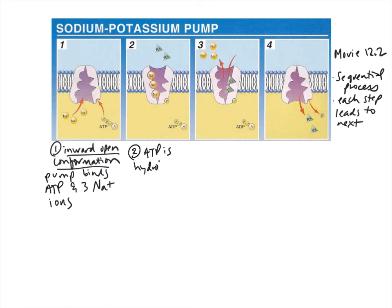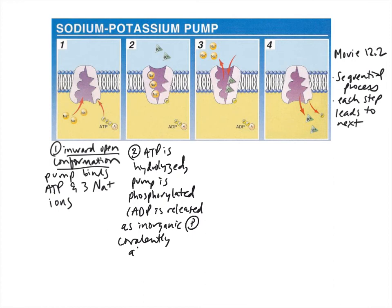The second step is that ATP is hydrolyzed. This means that the pump is phosphorylated. Basically the details for that is that ADP is released as the inorganic phosphate covalently attaches to the pump. As that happens, notice that the shape has changed of the protein. Here it is open inwards. When that phosphate binds, then that drives the conformational change. At this point the sodium ions are still bound, but the pump is open outwards.